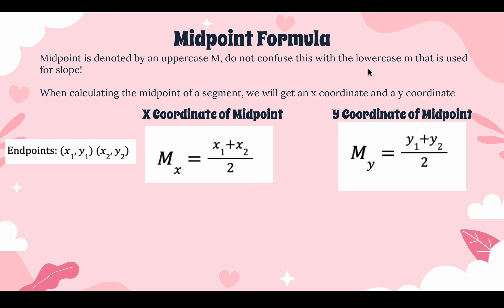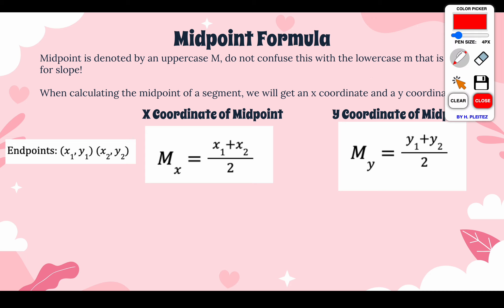When you're calculating the midpoint of a segment, you're going to need to have both endpoints — you need at least two endpoints to calculate that midpoint. Your endpoints are usually denoted as x1, y1 and x2, y2. This is also similar to slope, because when you're calculating the slope, we tell you to label your points as x1, y1 and x2, y2.